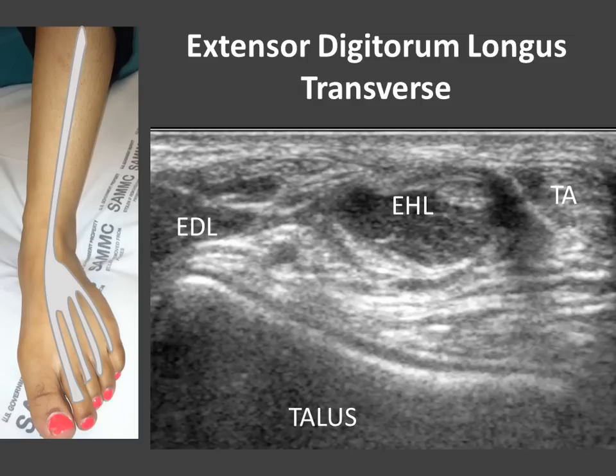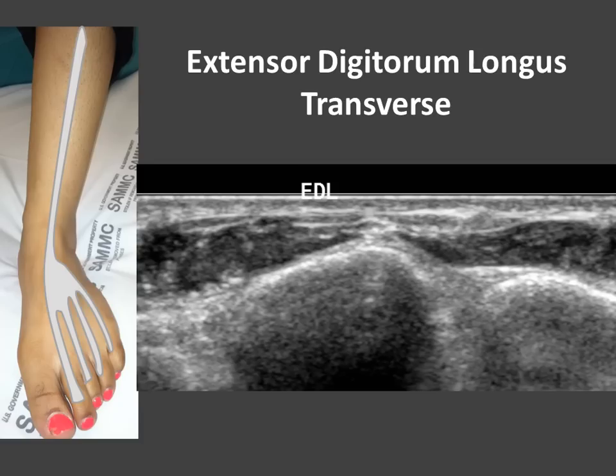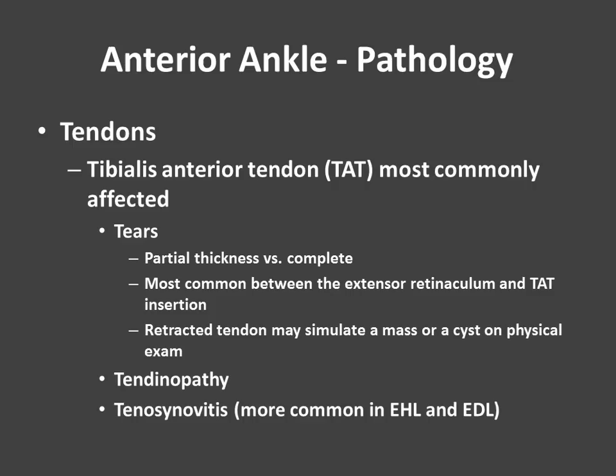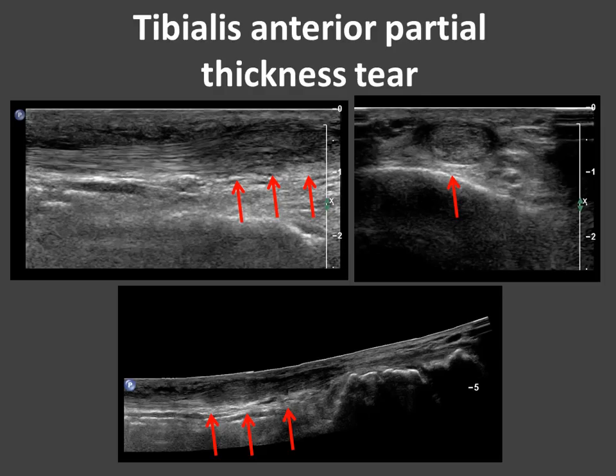Here I show the extensor digitorum longus with its accompanying extensor tendons — a nice round ovoid hypoechoic structure. Closer to where the tendons begin to split off, we see the four slips heading toward their respective toes. Some things we can see in the anterior ankle include problems with the tendons — tibialis anterior is the most commonly affected. We can see partial or complete tears, most commonly between the extensor retinaculum and its insertion. In a complete tear, the retracted tendon may simulate a mass or cyst on physical exam. We can also see tendinopathy and tenosynovitis, more common in the extensor hallucis and digitorum tendons. Here's an example of the tibialis anterior tendon — thickened and hypoechoic — consistent with partial thickness tear.